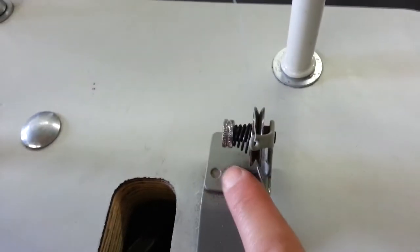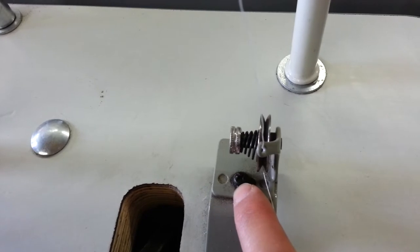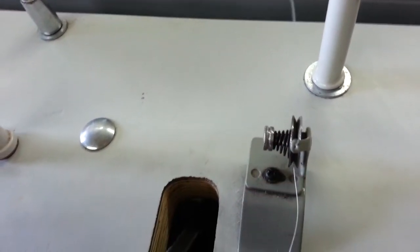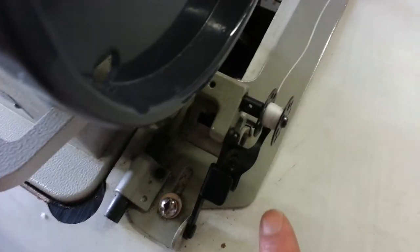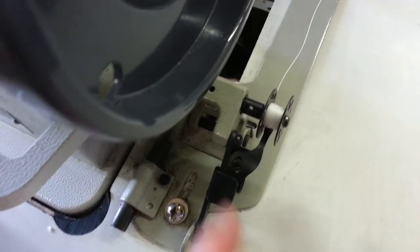And then also back here, this piece can be moved side to side. There's a screw here and then this can be moved side to side. If your bobbin is winding unevenly, you can move it side to side to make it even.